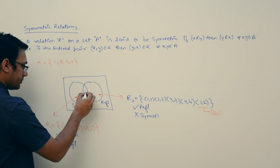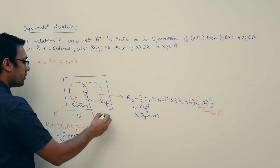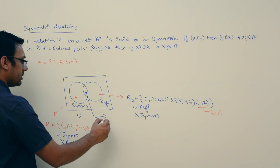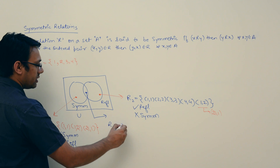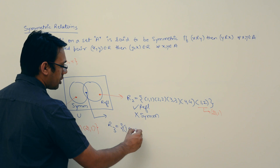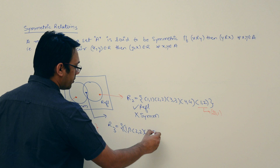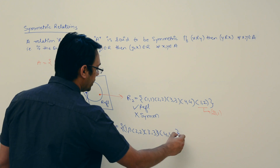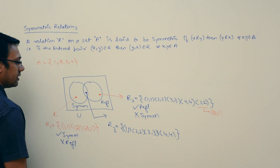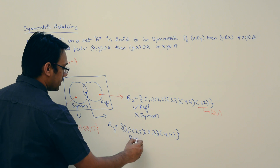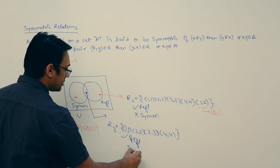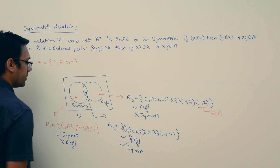For the intersection region — a relation that is both symmetric and reflexive — consider R3 = {(1,1), (2,2), (3,3), (4,4)}. This relation has only diagonal pairs, so it is reflexive as well as symmetric.